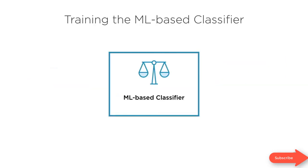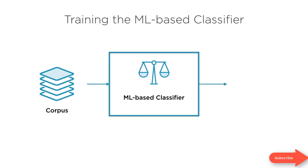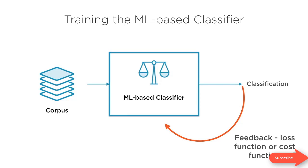Let's talk briefly about training your machine learning model. When you train your model, you have an objective function or loss function that you try to minimize. You feed in a corpus of training data to your ML based classifier and get a classification at the output. As the model learns from training data, feedback is fed back in to improve its parameters — this feedback is the loss function, also known as the cost function or objective function. Minimizing the loss function improves your model parameters and makes it a more robust model for prediction.